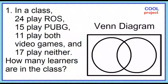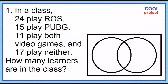Let's use a Venn diagram to solve this problem. Let R be the set of RAWS players and let P be the set of PUBG players. Start with the intersection of the two sets — 11 play both video games. Place 11 in the area where R and P overlap.